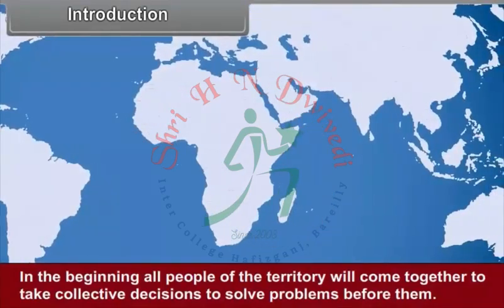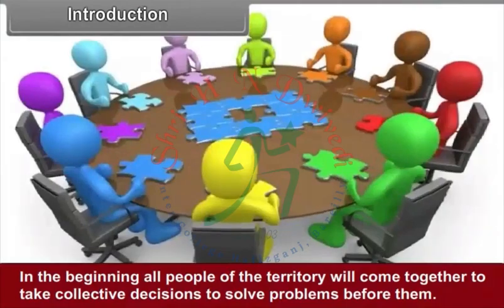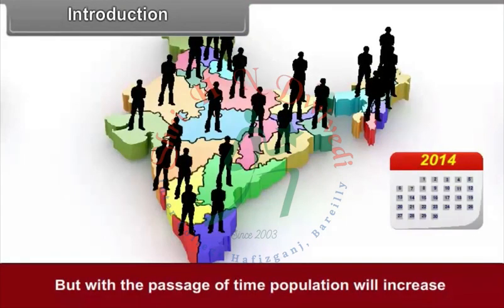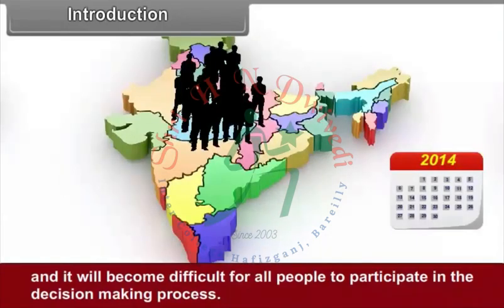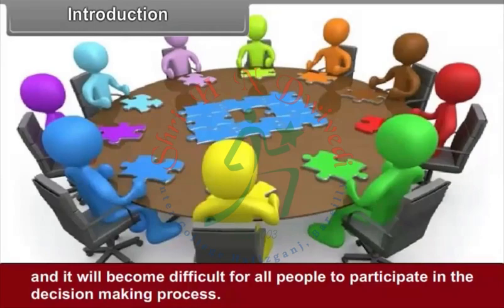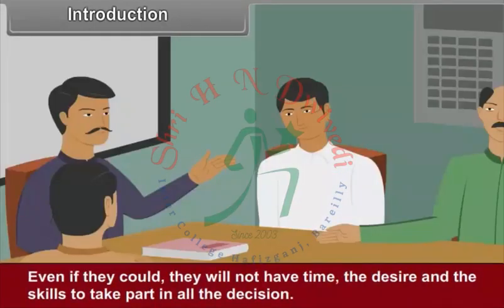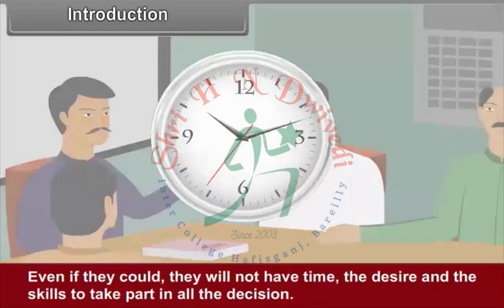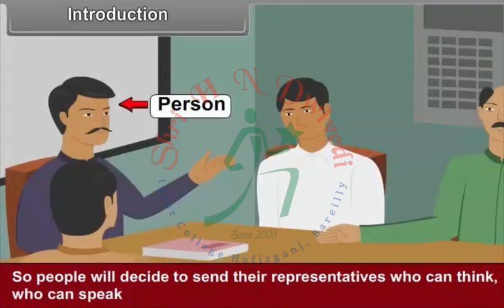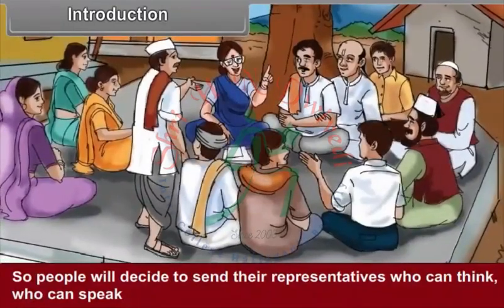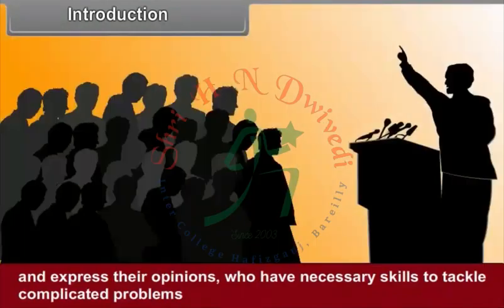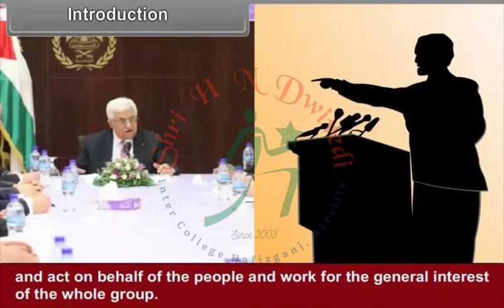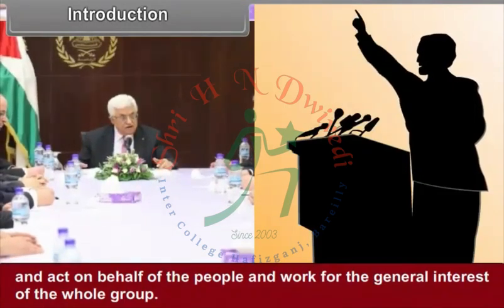In the beginning, all people of the territory will come together to take collective decisions to solve the problems before them. But with the passage of time, population will increase and it will become difficult for all people to participate in the decision-making process. Even if they could, they will not have the time, the desire, and the skills to take part in all decisions. So people will decide to send their representatives who can think, speak, and express their opinions, who have the necessary skills to tackle complicated problems, and act on behalf of the people to work for the general interests of the whole group.